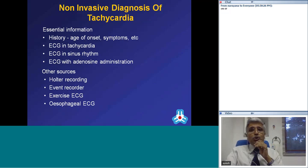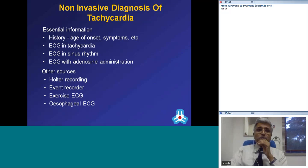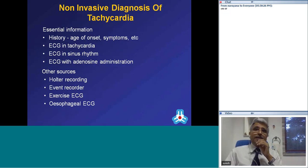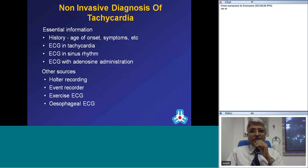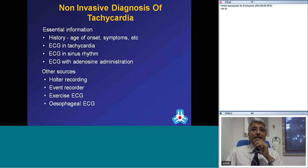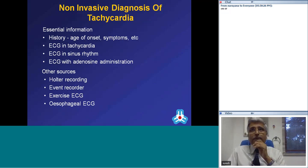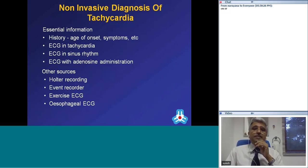When you want to diagnose tachycardia, the tools begin with history — you would want to know the age of onset. If a tachycardia was present on day one, it is very likely to be SVT. If a tachycardia is associated with syncope, it either means it is ventricular tachycardia or an SVT at a very fast rate. You would very much want the ECG during tachycardia, in sinus rhythm, and it is very useful to record what happens when adenosine is given during the arrhythmia. A Holter recording, an event recorder, an exercise ECG, or an esophageal ECG are all useful tools.